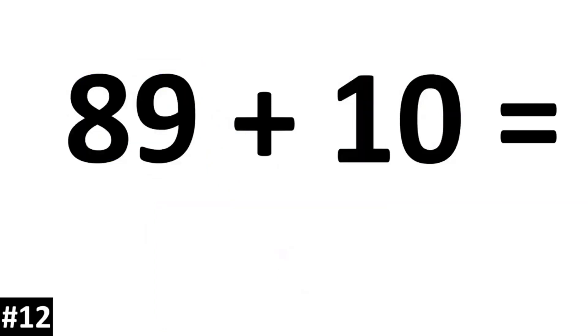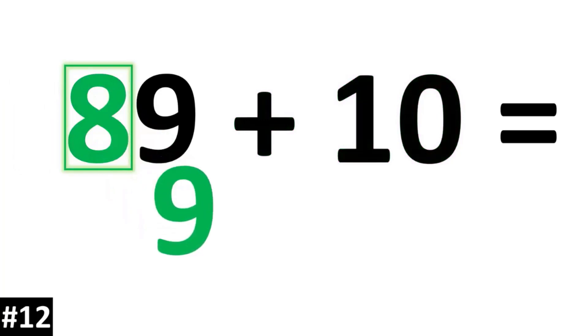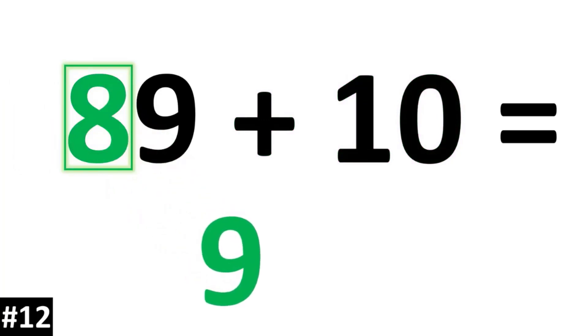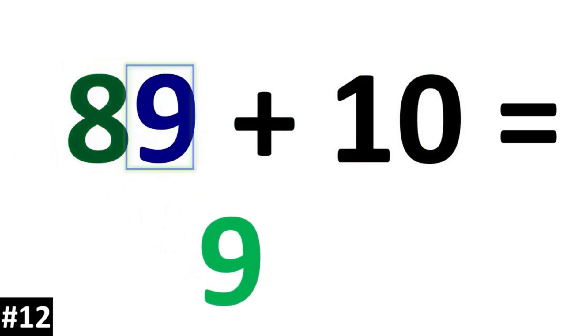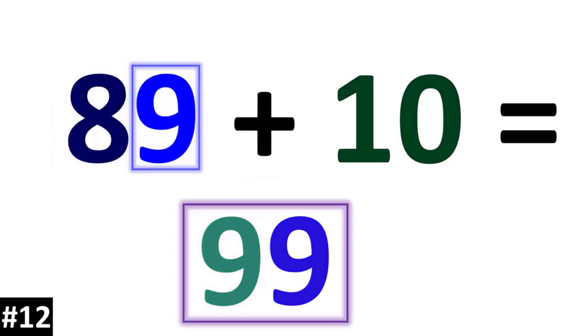89 plus 10: the 8 as the tens digit is going to go up by 1 and become a 9. The ones digit stays the same. 89 plus 10 is 99.